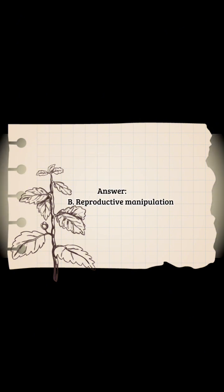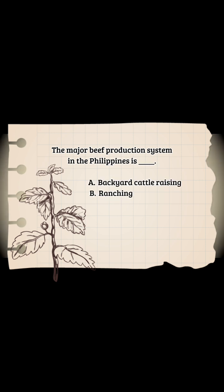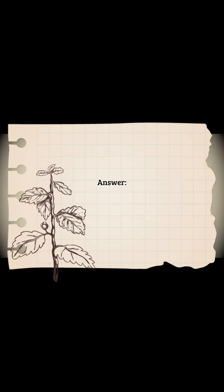The major beef production system in the Philippines is: A - backyard cattle raising, B - ranching, C - commercial cattle raising, D - feedlot fattening. Answer: A - backyard cattle raising.